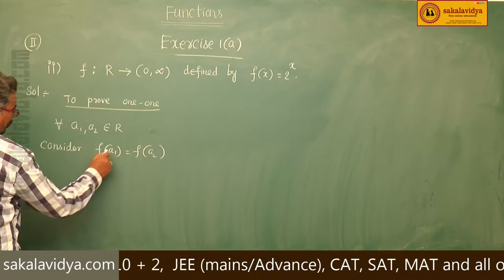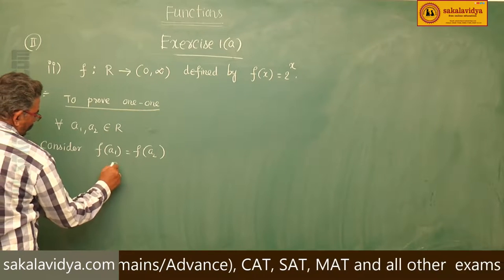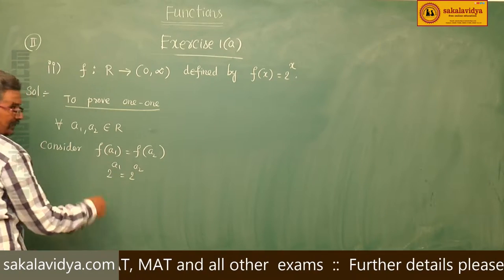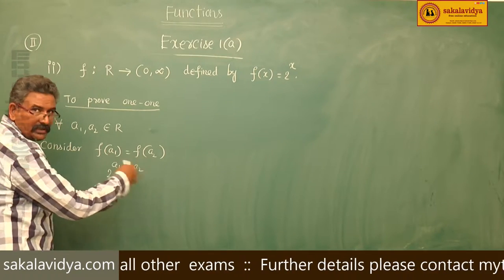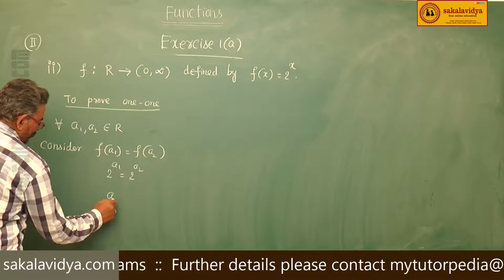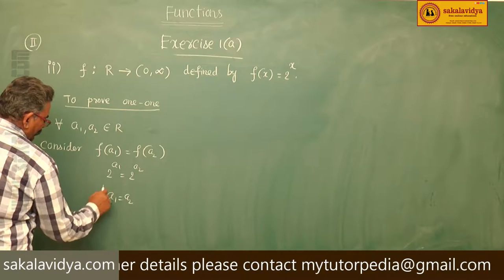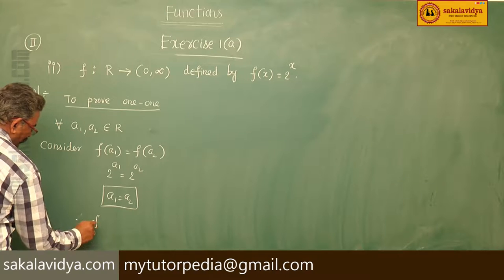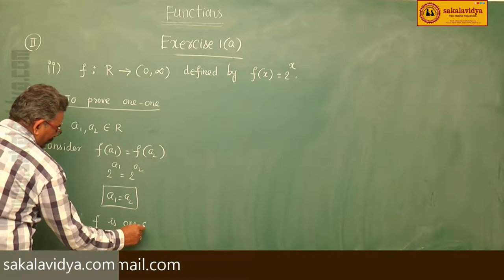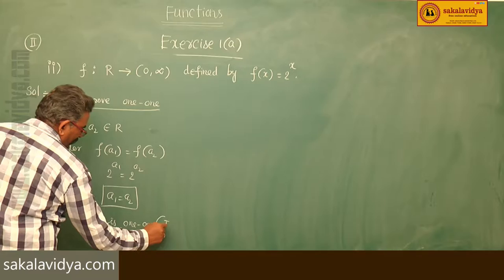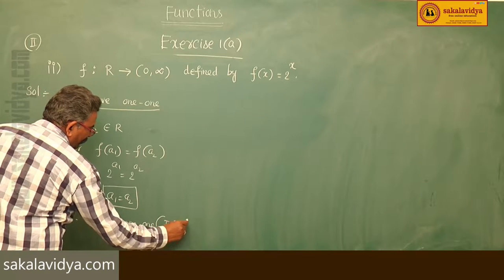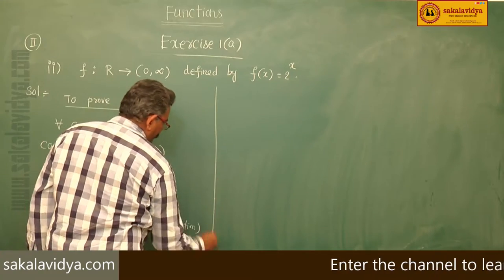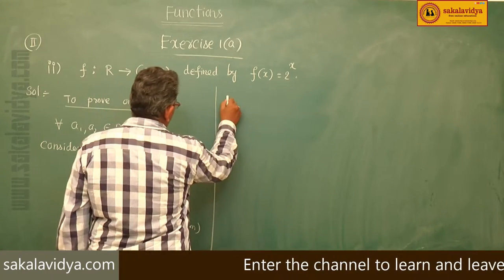f(a1) = 2^(a1) and f(a2) = 2^(a2). Since the bases are equal, the powers are equated. So a1 = a2. Therefore, f is 1-to-1, i.e., an injection.